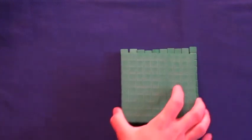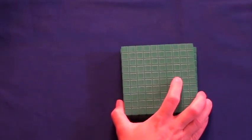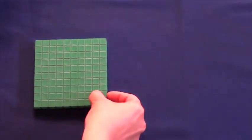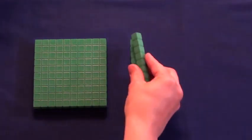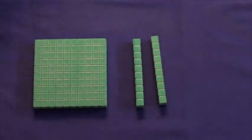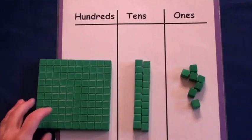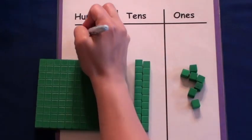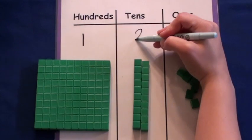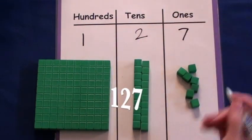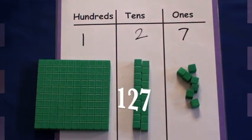Just like you group ten ones to create one ten, you group ten tens to make one hundred. Watch as I gather blocks to create the number one hundred twenty-seven. I will use one hundred block, two tens, and seven ones. One hundred twenty-seven.